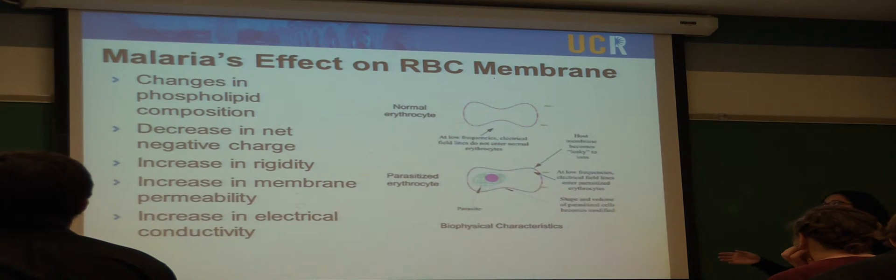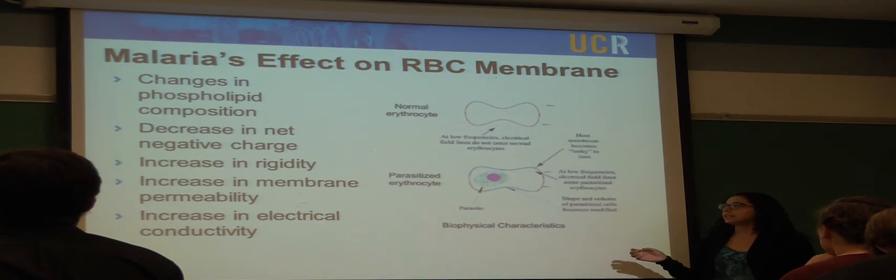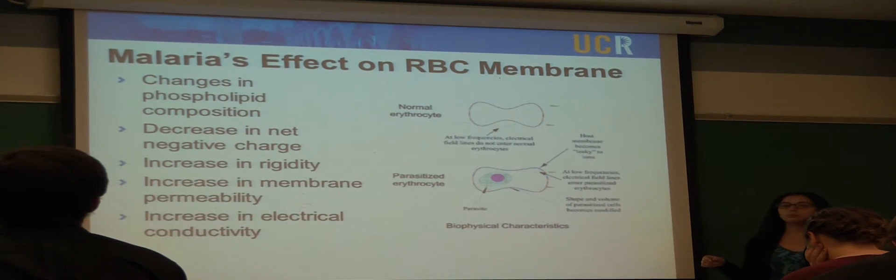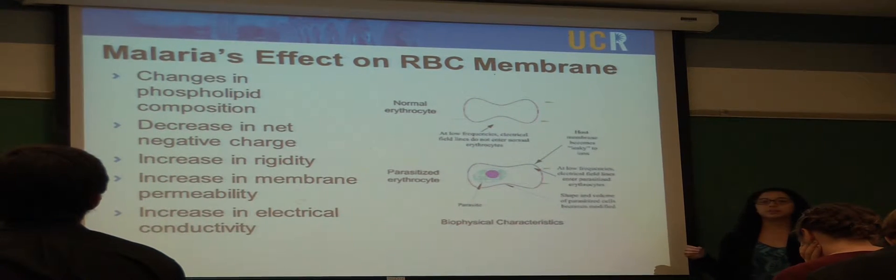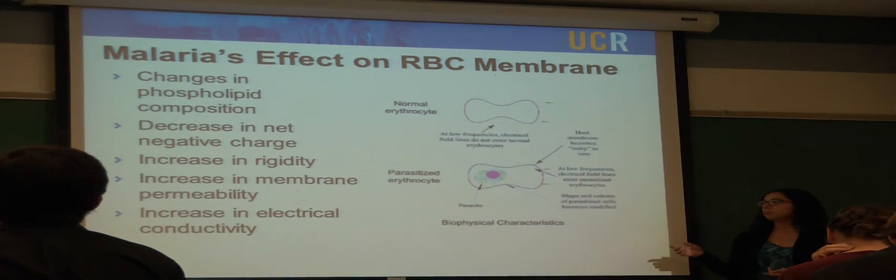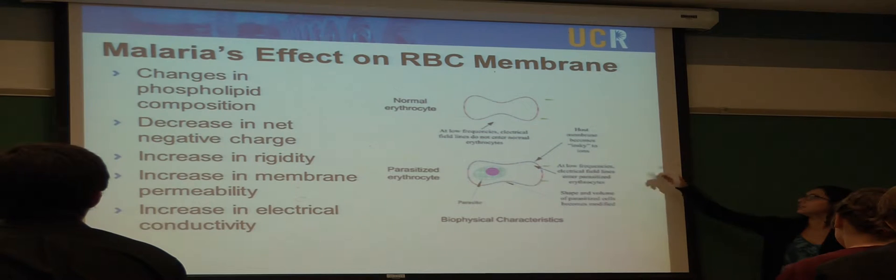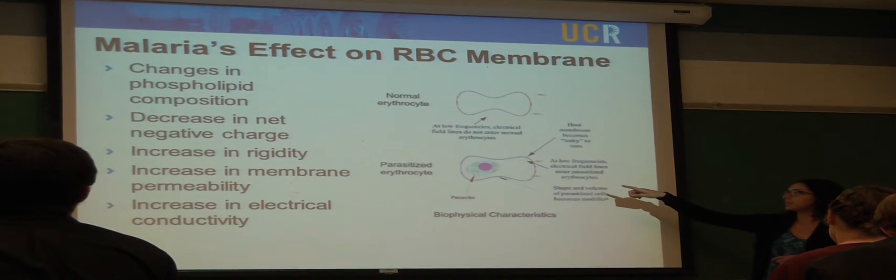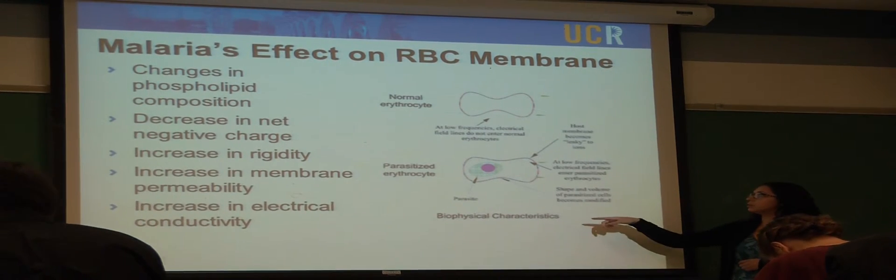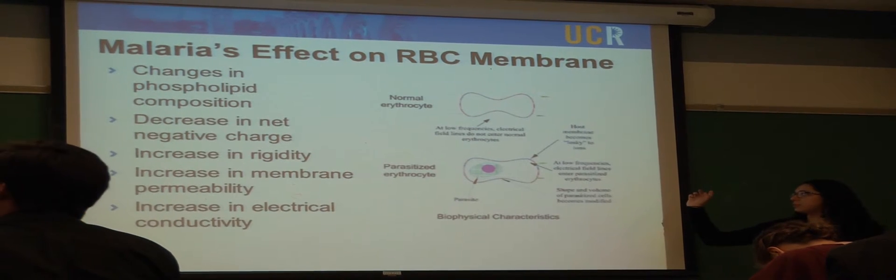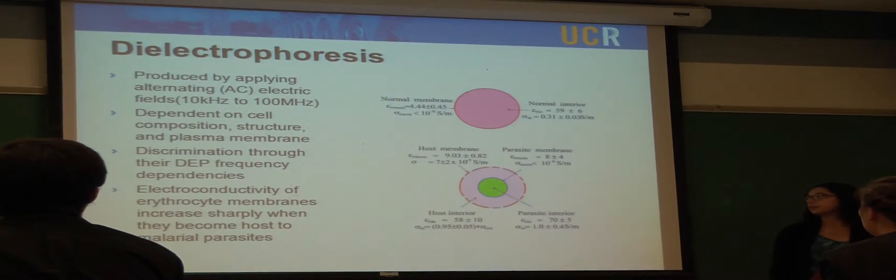The malaria effects are on the red blood cells' membrane, and it causes changes in phospholipid composition. It decreases the net negative charge and increases the rigidity and increases the membrane permeability due to the red blood cells trying to meet the demands of the growing parasite's demands for nutrients and the elimination of waste. It also increases the electrical conductivity, which is the main thing that lab-on-a-chip takes advantage of. Here's a normal red blood cell and a parasite-infected red blood cell. The shape is slightly different, and also the infected one is more permeable to ions. At low frequencies, when the electric fields pass through the diseased one, they'll pass through it, and in a normal one, it'll pass around it.